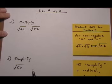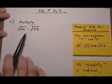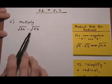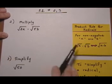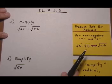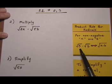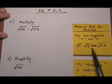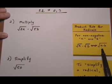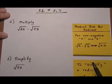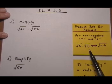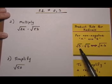Let's look first at number 2, where we want to multiply these two radicals. Here's the property we're using: if you have two numbers, A and B, in radicals being multiplied together, it's the same as putting them both underneath the radical and multiplying them. That's for non-negative A and B, and for this whole course, we're going to be using non-negative numbers inside the radical.